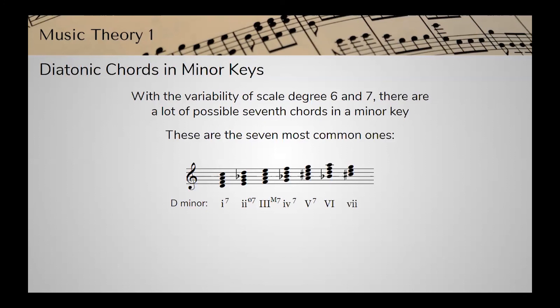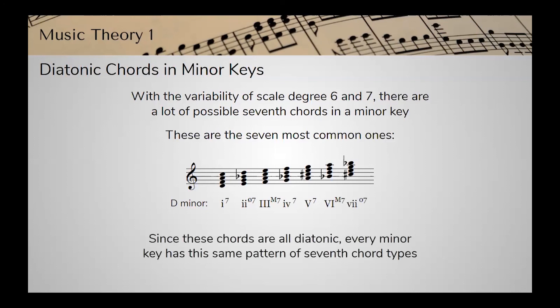The VI chord: adding an A to make it a seventh gives a major seventh between B flat and A, and since B flat, D, F was a major triad, this is a major seventh chord. Then at the end of the scale, built on C sharp — C sharp, E, G is a diminished triad — adding a B flat gives a diminished seventh interval, making this the only fully diminished seventh chord in the pattern. And just like major, every minor key has the same pattern of seventh chord types, so it's worth memorizing this.